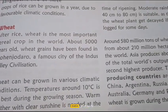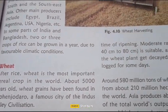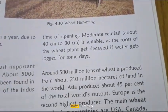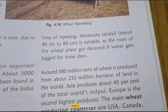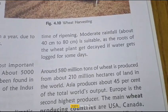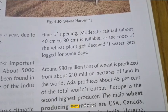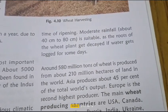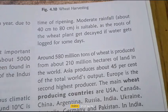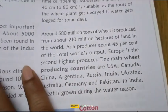Warm weather with clear sunshine is required at the time of ripening. Moderate rainfall, from 40 cm to 80 cm, is suitable. As the roots of the wheat plant get decayed in waterlogged conditions, it should be ensured that water is not locked in the wheat plant fields.